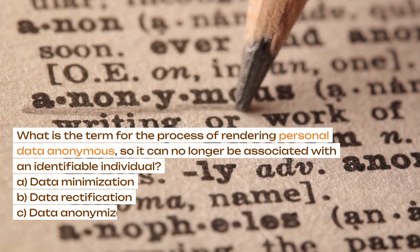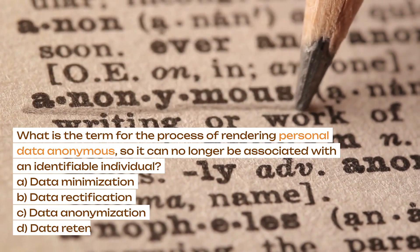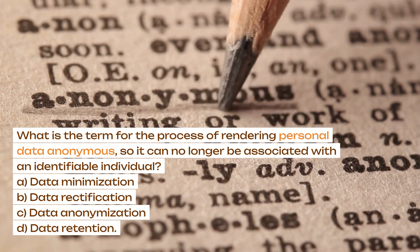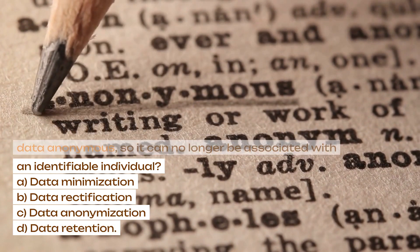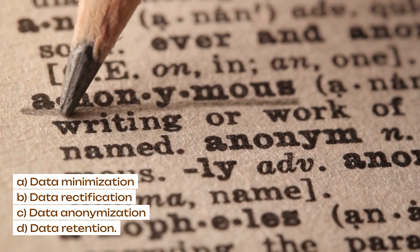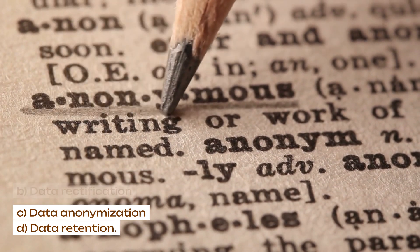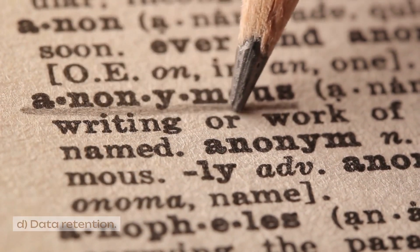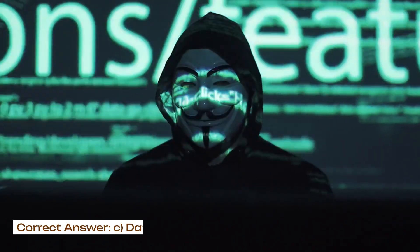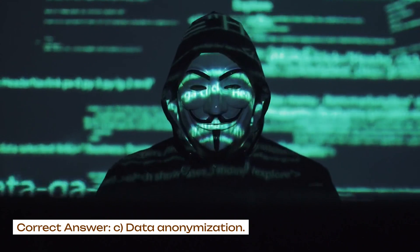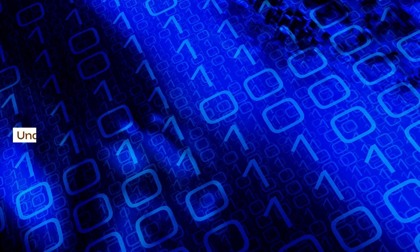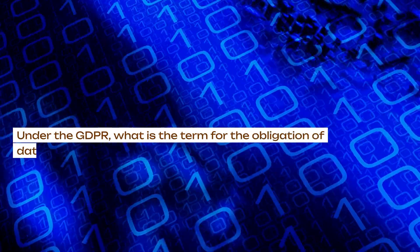What is the term for the process of rendering personal data anonymous, so it can no longer be associated with an identifiable individual? A. Data minimization. B. Data rectification. C. Data anonymization. D. Data retention. Correct answer: C. Data anonymization.